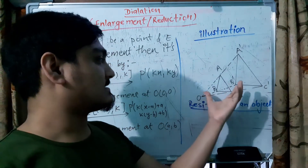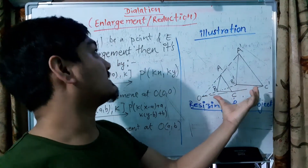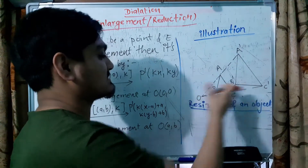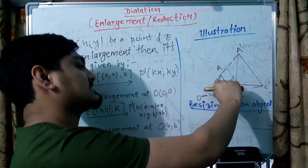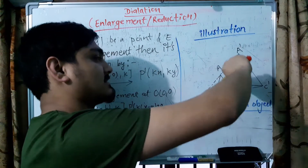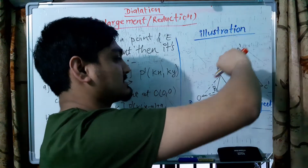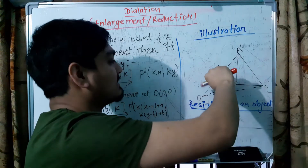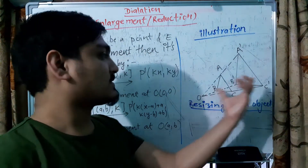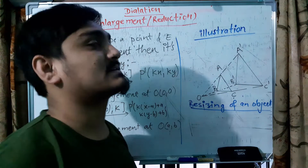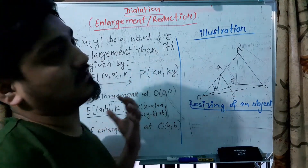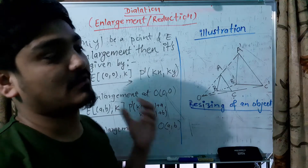Similar to dilation, enlargement depends on scaling. If you have a positive scale factor and the scale is less than one, the size is smaller. The resizing of an object is known as reduction, dilation, and enlargement.